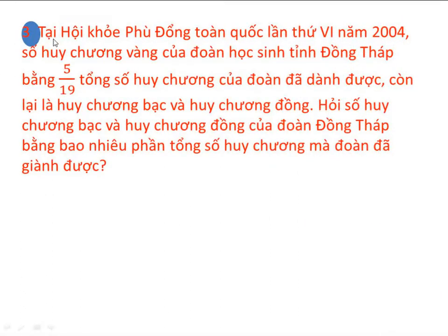Các em đọc đề cùng cô nào. Tại hội khỏe Phù Đổng toàn quốc lần thứ 6 năm 2004, số huy chương vàng của đoàn học sinh tỉnh Đồng Tháp bằng 5 phần 19 tổng số huy chương của đoàn giành được. Còn lại là huy chương bạc và huy chương đồng. Hỏi số huy chương bạc và huy chương đồng của đoàn Đồng Tháp bằng bao nhiêu phần tổng số huy chương mà đoàn đã giành được?